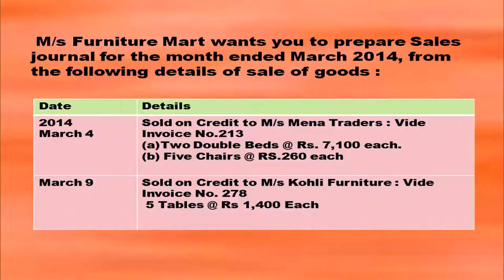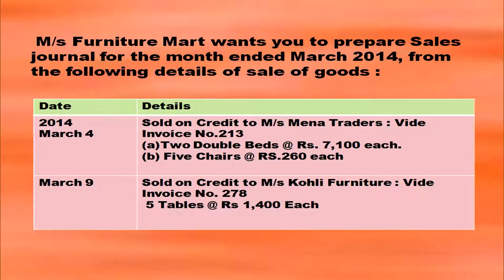Messers Furniture Mart wants you to prepare a sales journal for the month of March 2014 from the following details. On March 4th, sold on credit to Messers Mina Traders: two double beds at Rs. 7,100 each and five chairs at Rs. 260 each. On March 9th, sold on credit to Messers Kohli Furniture: five table sets at Rs. 1,400 each.